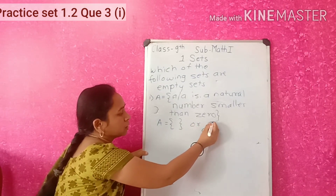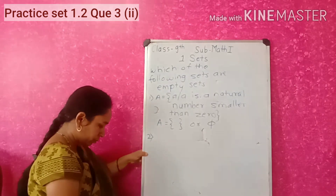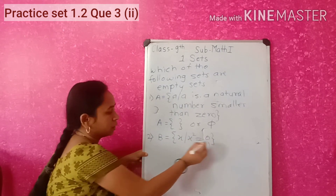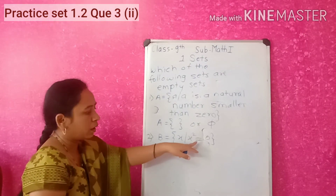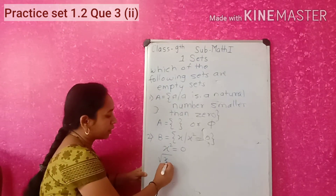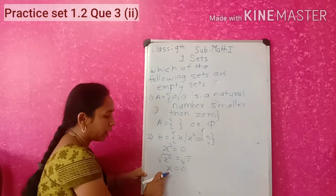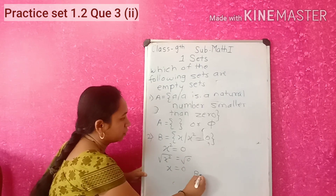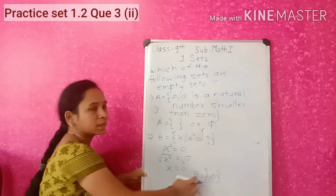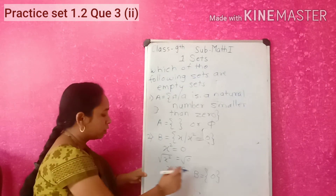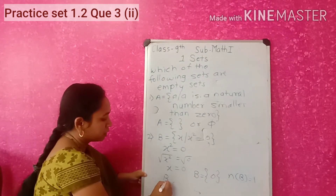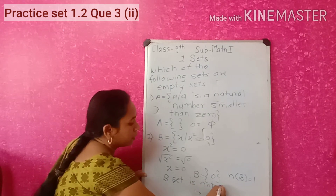Second example: set B is x such that x squared equals 0. We need to find x. Taking the square root of both sides, x equals 0. So x has only the value 0, meaning B contains the element 0. This is a common confusion — 0 is an element, so N(B) equals 1. Therefore set B is not an empty set.